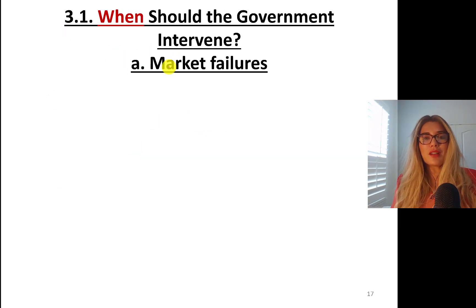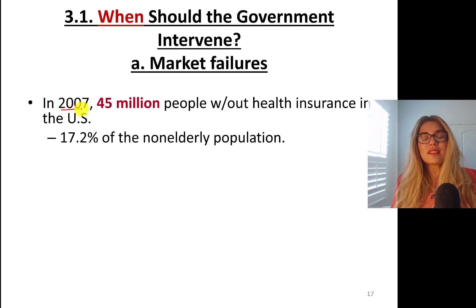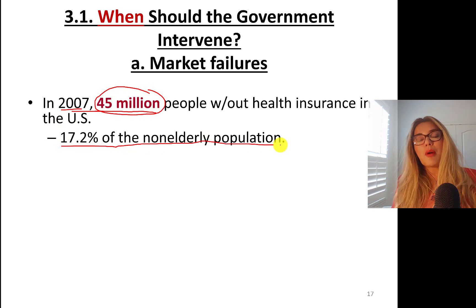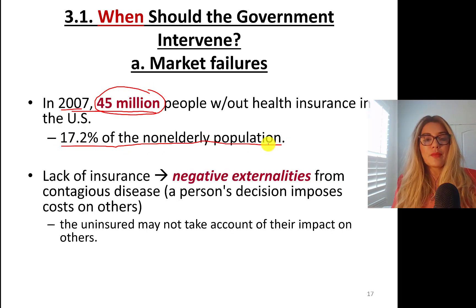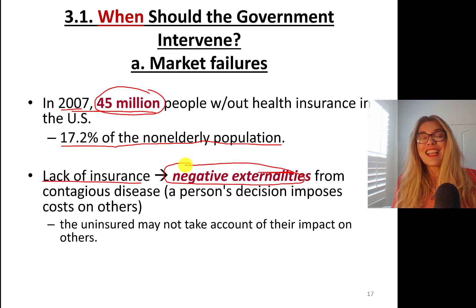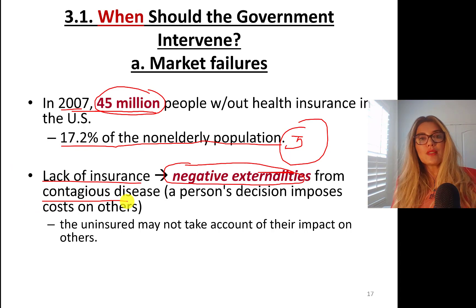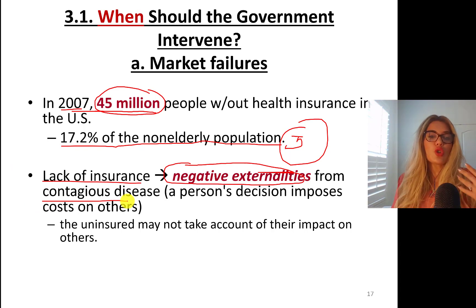In 2007, 45 million people were without health insurance in the United States — more than 17.2% of the non-elderly population. Lack of insurance creates negative externalities, for instance from contagious diseases. We'll learn about this in chapter five. If you decide not to have insurance, you impose costs on others, and the uninsured may not take account of their impact on others.